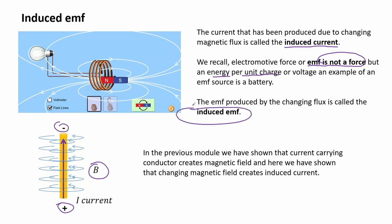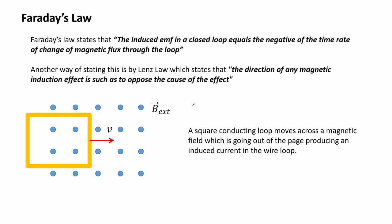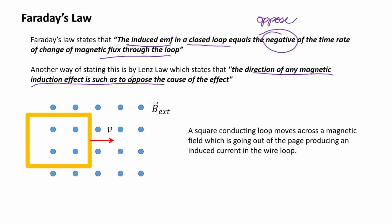In the previous module we showed that a current-carrying conductor creates a magnetic field, and here we have shown that a changing magnetic field creates induced current. This is basically the idea of Faraday's law. Faraday's law states that the induced EMF in a closed loop equals the negative of the time rate of change of magnetic flux through the loop. The negative term indicates that it opposes the external magnetic field as a consequence of conservation of energy. Another way of stating this is by Lenz's law, which states that the direction of any magnetic induction effect is such as to oppose the cause of the effect.